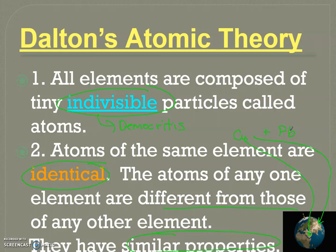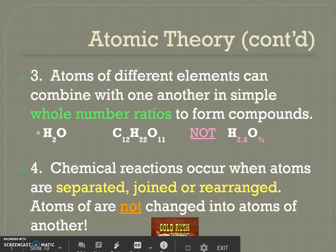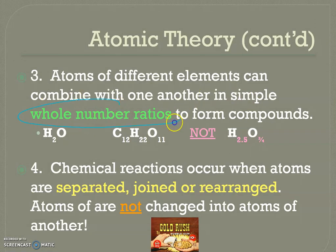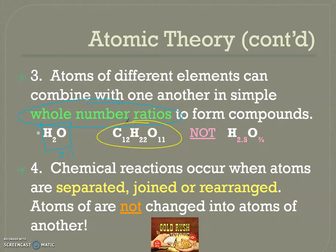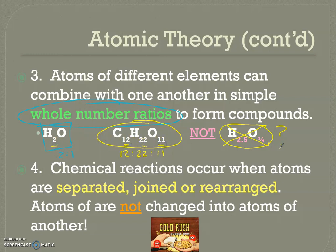Number three: atoms of different elements can combine in whole number ratios to form compounds. Think of atoms as letters of the alphabet and compounds as words. H₂O is a 2:1 ratio; sucrose (C₁₂H₂₂O₁₁) is a 12:22:11 ratio. You'll never see something like H₂.₅O¾ — that looks wrong because atoms are indivisible, so only whole numbers appear.